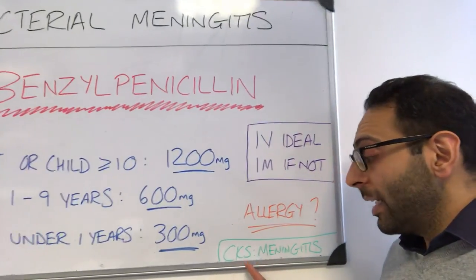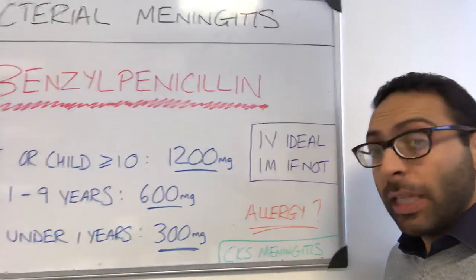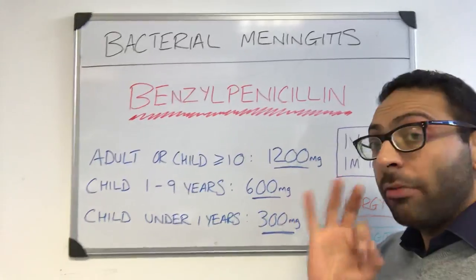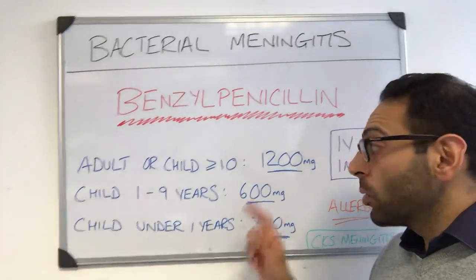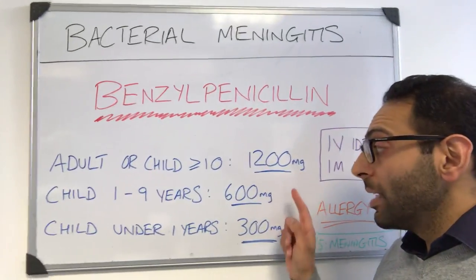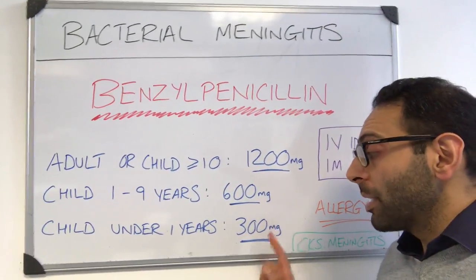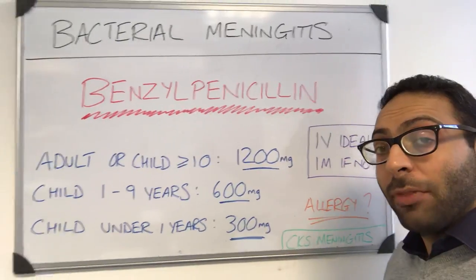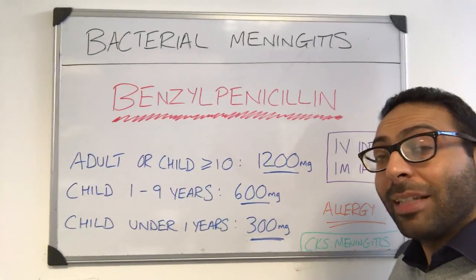Have a look at CKS meningitis for further information. To summarise: benzoyl penicillin, three doses — 1200 milligrams, 600 milligrams, 300 milligrams — ideally IV, but IM if you can't.